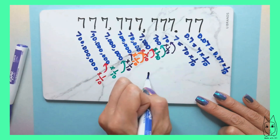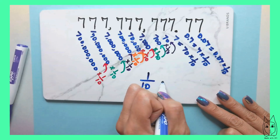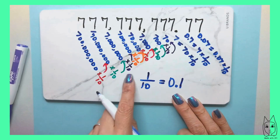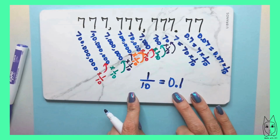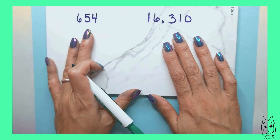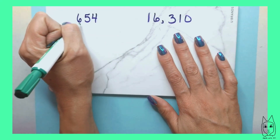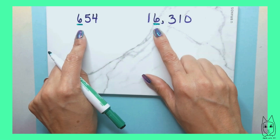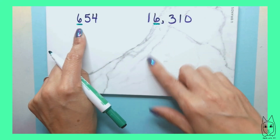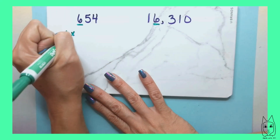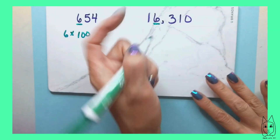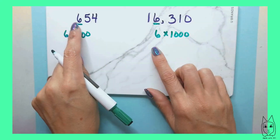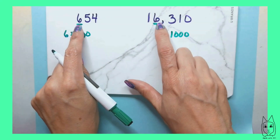Note that I used 1/10 to represent a tenth, but you could also use 0.1, which is also a tenth. Now let's look at two numbers that have only one digit in common — the digit six. In one number, the six is in the hundreds place, representing six times 100. In the other number, the digit six is in the thousands place, representing six times 1,000. We want to compare the value of this six to the value of that six.